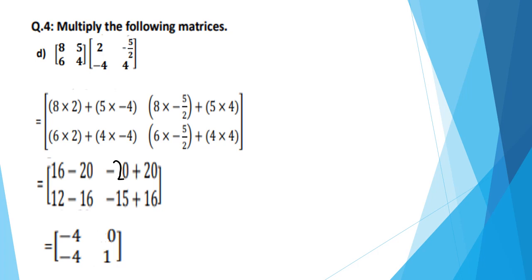40/2 equals minus 20, plus 5 times 4 equals 20. Second row: 6 into 2 equals 12, plus 4 into minus 4 equals minus 16; 6 into minus 5/2 equals minus 15, plus 4 into 4 equals 16. Adding the products: 16 minus 20 equals minus 4; minus 20 plus 20 equals 0; 12 minus 16 equals minus 4; minus 15 plus 16 equals 1.